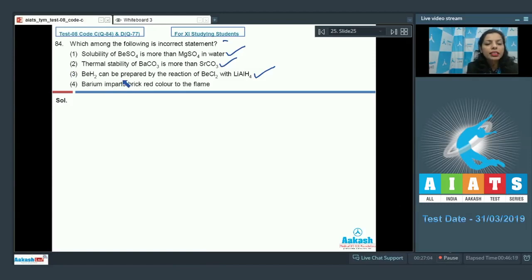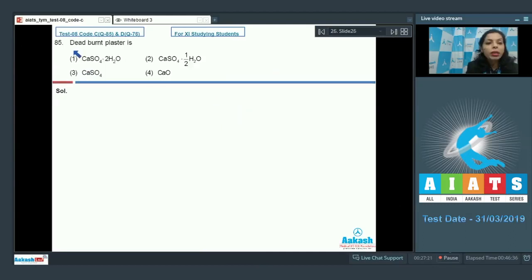Barium imparts brick red color to the flame. No, barium imparts apple green color, not the brick red color. That's why this is wrong statement. So option 4 becomes your correct answer for this particular question.